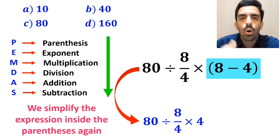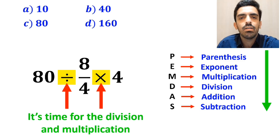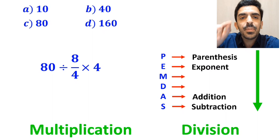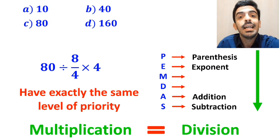Now it's time for the division and multiplication. However, it's very important to note that according to the PEMDAS rule, multiplication and division have exactly the same level of priority.